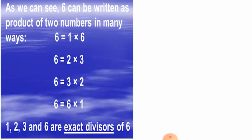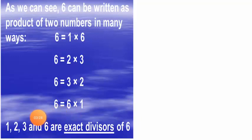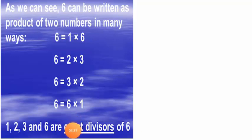Now let's understand how any number can be expressed in many ways as a product of two numbers. Take the number six: one multiplied with six gives six; two multiplied with three gives six; three multiplied with two gives six; and six multiplied with one gives six. So one, two, three, and six are the exact divisors of six — these are the factors of six.